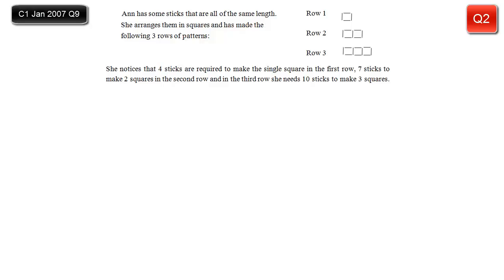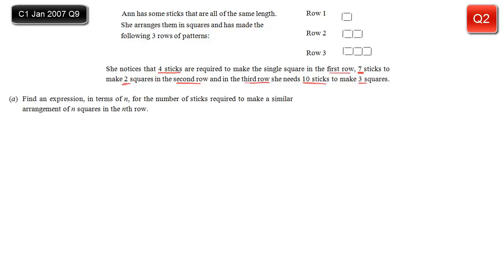In this question, Anne has got some sticks and she's made a bunch of patterns. In the first pattern there are four sticks, making just one square. Then there are seven sticks in the next pattern, making up two squares. And in the third row, she's got ten sticks, making up three squares. So this is obviously a sequence: 4, 7, 10, and so on. It's going up in threes — it's an arithmetic series.